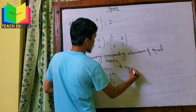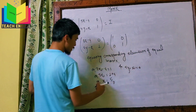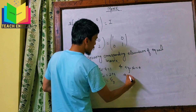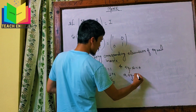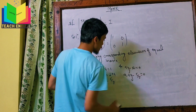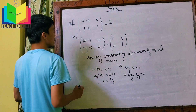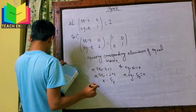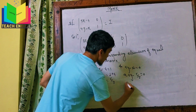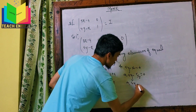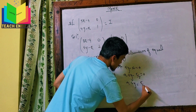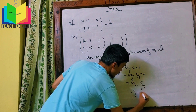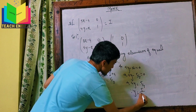And 4y-x is equal to 0, which means 4y is equal to x. Substituting x equals 5/3, we get y equal to 5 divided by 4 times 3, giving y equal to 5/12.